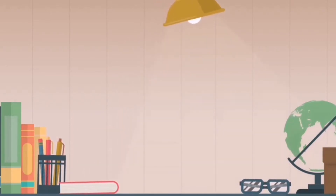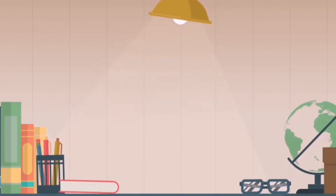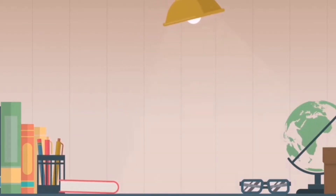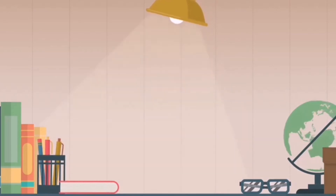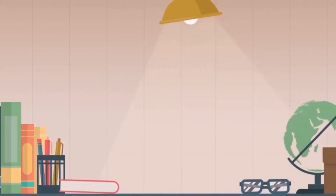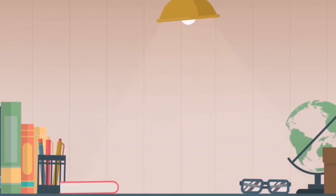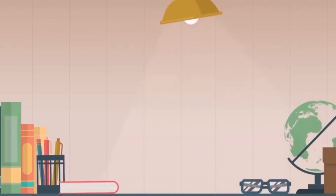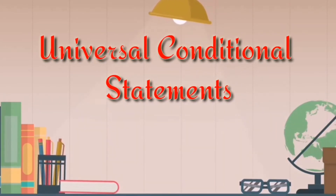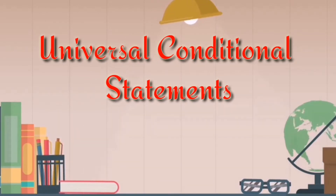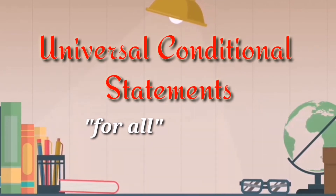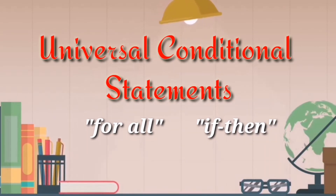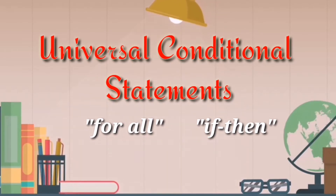Combinations of these statements can be expressed in a variety of different ways. One way uses ordinary everyday language, and another expresses the statement using one or more variables. The exercises are designed to help you start becoming comfortable in translating from one way to another. Universal statements contain some variation of the word 'for all,' and conditional statements contain versions of the words 'if' and 'then.'